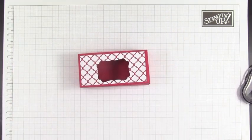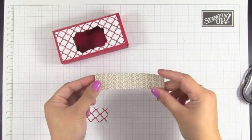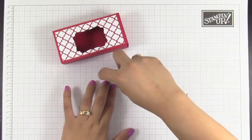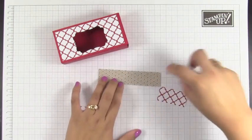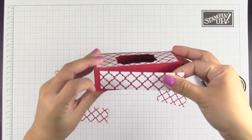Okay, now to decorate the box you're going to need some pattern paper. This piece goes at the bottom and it measures 4 and a quarter inch by 1 inch. Place this one right here.